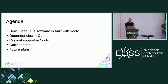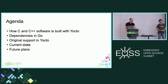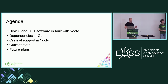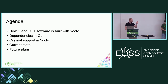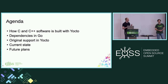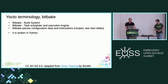I'm going to introduce our agenda today. First, Slava will talk about how C and C++ applications are built within Yocto, just to line out the difference to how Go is built, which is my part in the later stage. Then we'll talk about dependency management in Go, when Go support was originally added to Yocto, what the current state is, how to get your Go applications to run within your Yocto image, and our future plans.